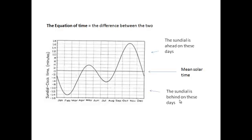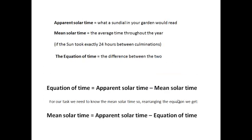On some days the equation of time is positive — your sundial would be ahead. On some days the equation of time is negative. So: apparent solar time is what a sundial would say, mean solar time is the average throughout the year, and the equation of time is the difference between the two — apparent solar time minus mean solar time.